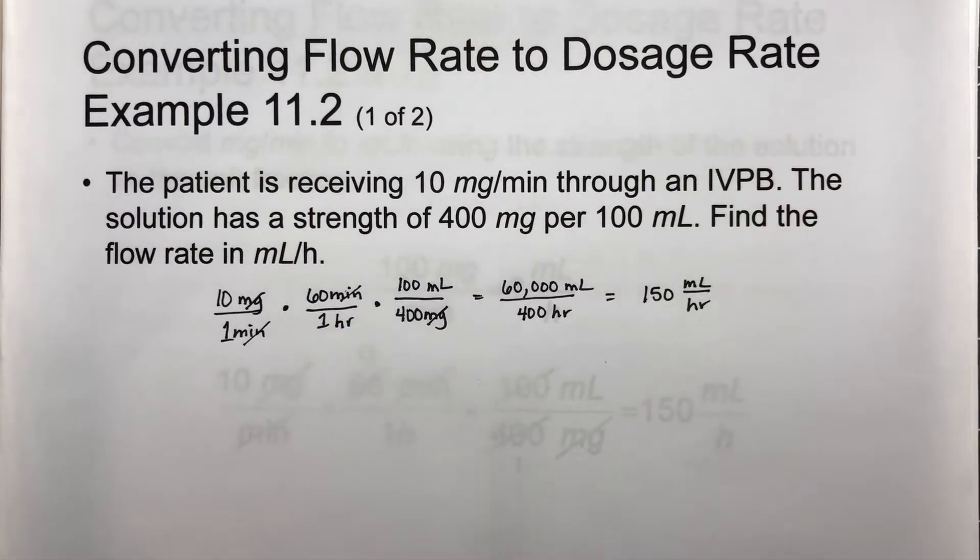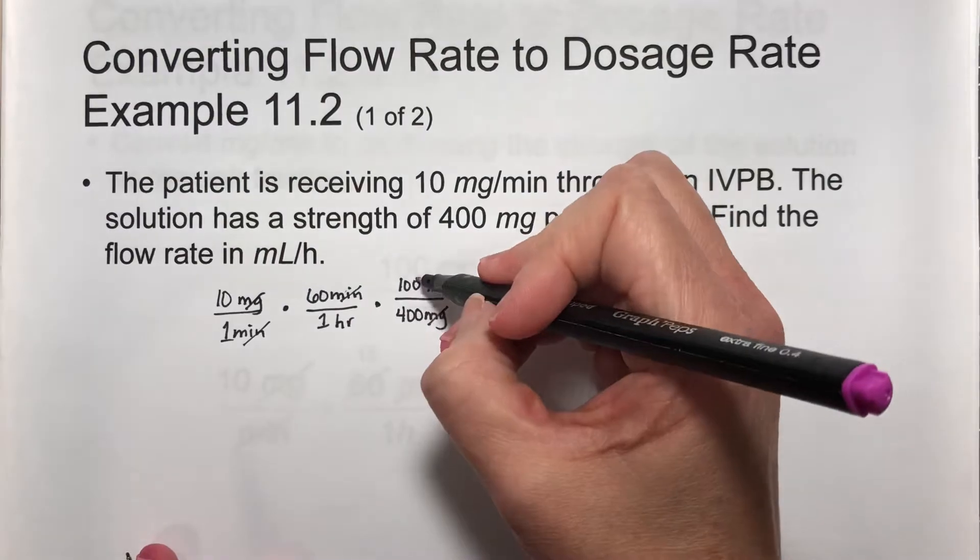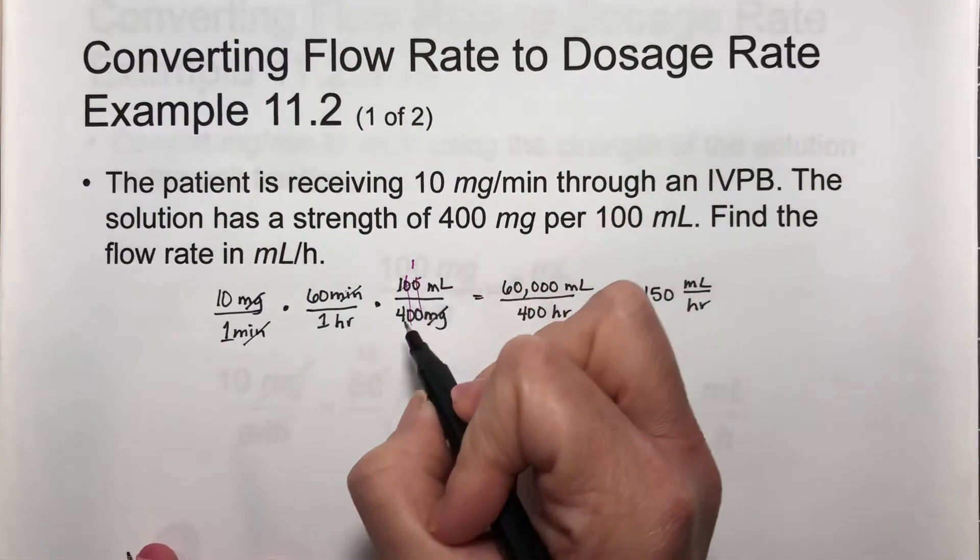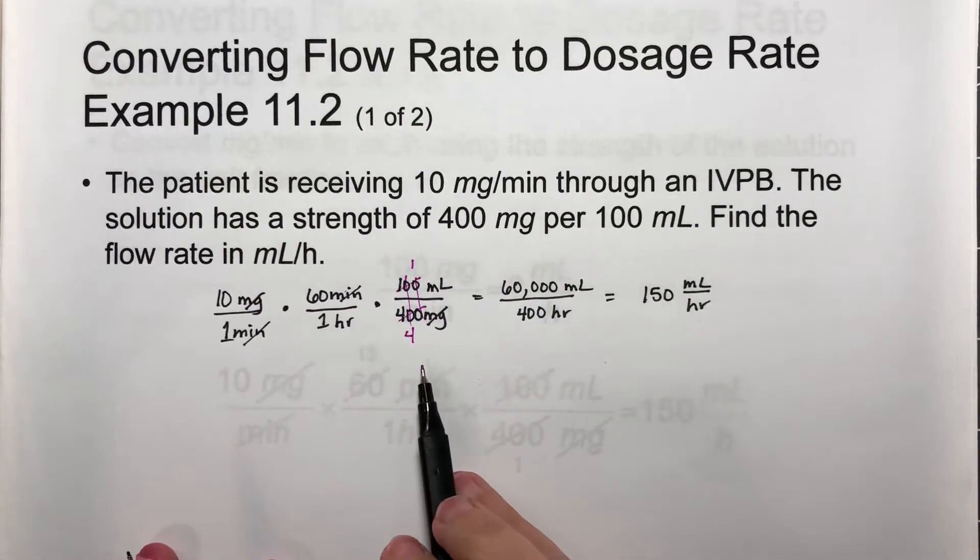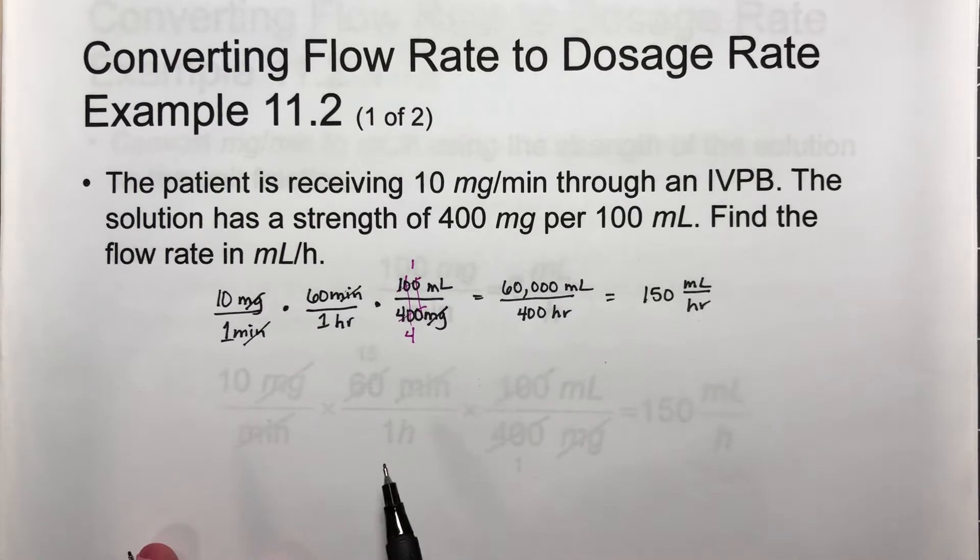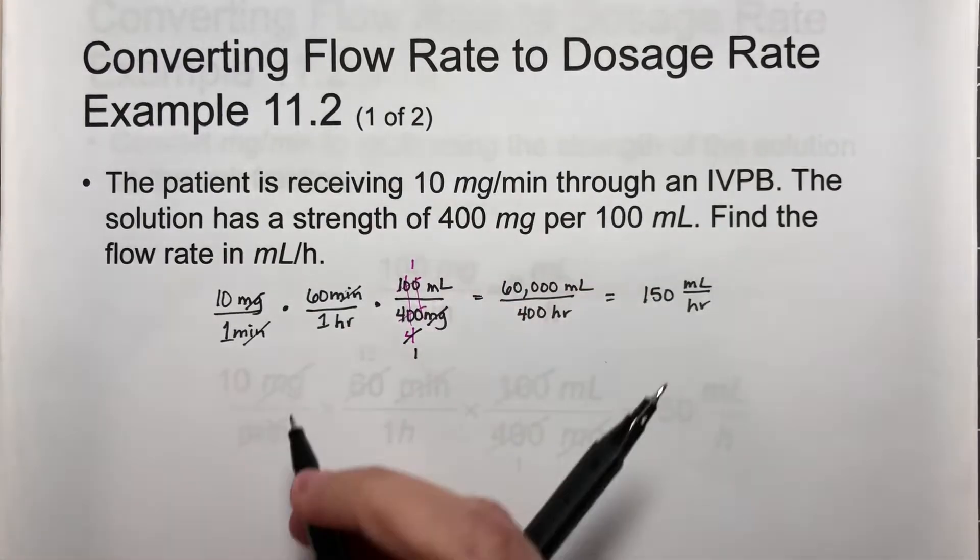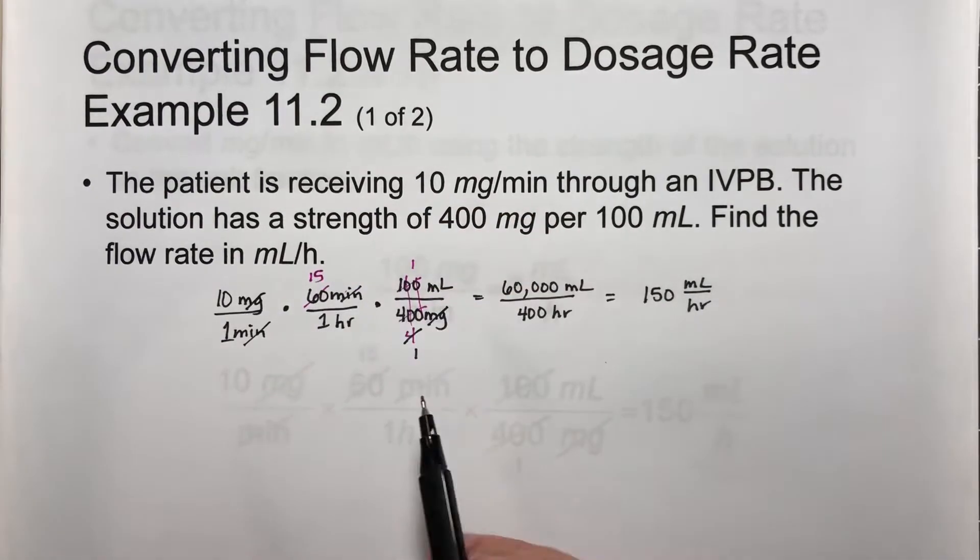If you go to reduce it, do some cross cancellations first. 400 and 100, if you divide those by 100, you get 1 over 4. Now you can multiply straight across and get 600 divided by 4, and you'll get 150. Or if you notice that 4 and 60 will reduce, divide 4 by 4 and get 1, divide 60 by 4 and get 15. Now multiply 10 times 15, and you get 150.